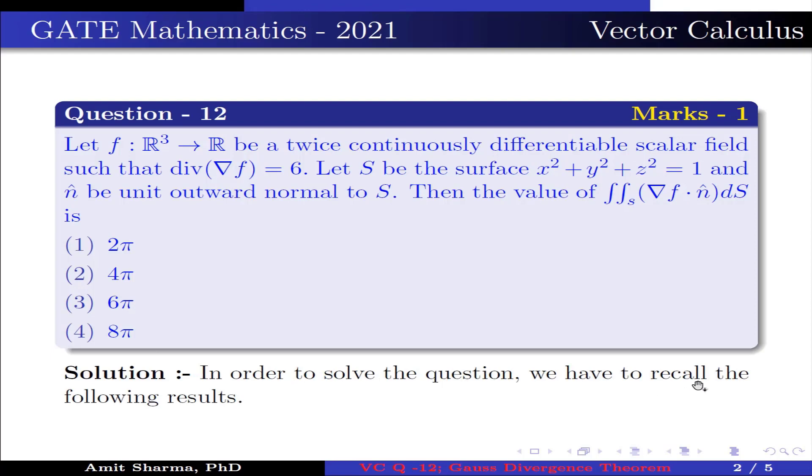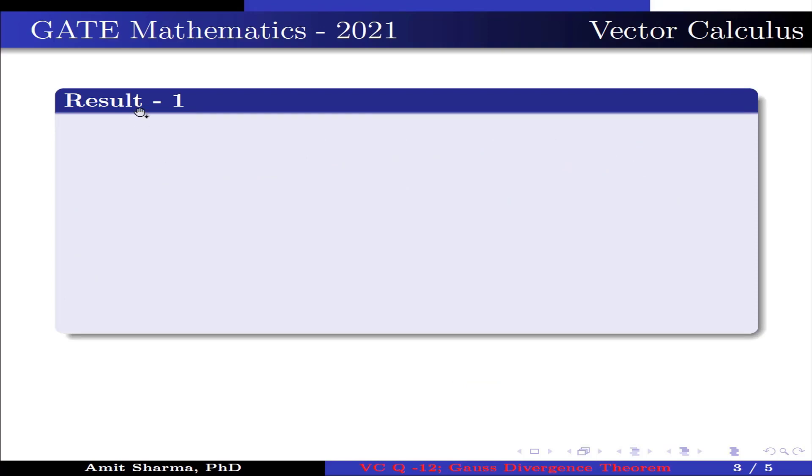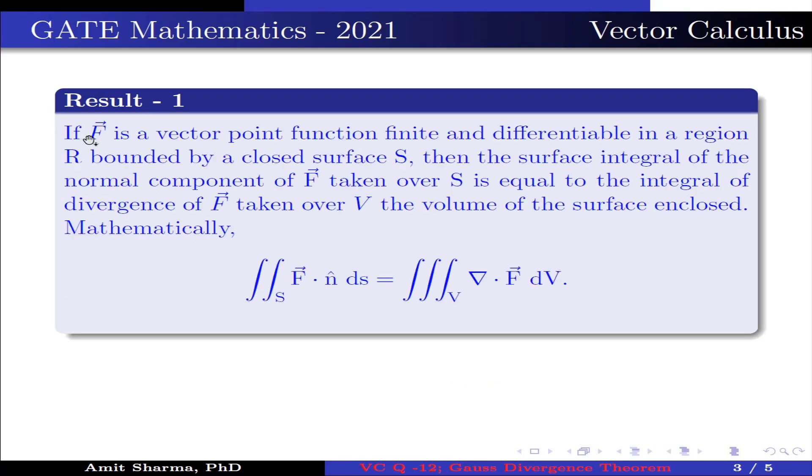In order to solve the question, we have to recall the following results. Result number 1: If F⃗ is a vector point function finite and differentiable in a region R bounded by closed surface S, then the surface integral of the normal component of F⃗ taken over S is equal to the integral of divergence of F⃗ taken over V, the volume of surface enclosed. Mathematically, double integration over S, F⃗ dot n ds equals triple integration over V, del dot F⃗ dV.